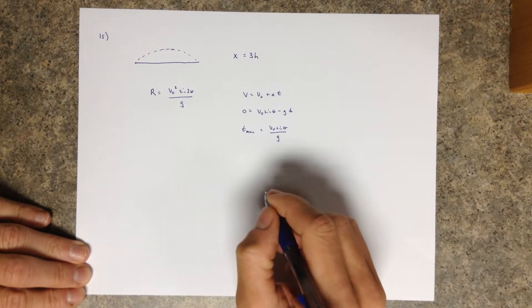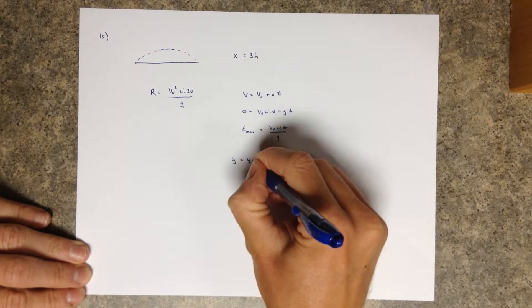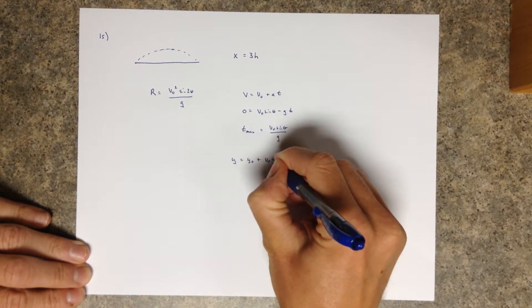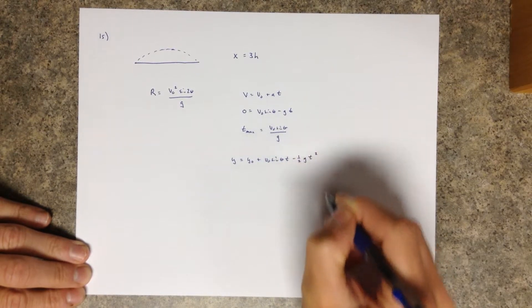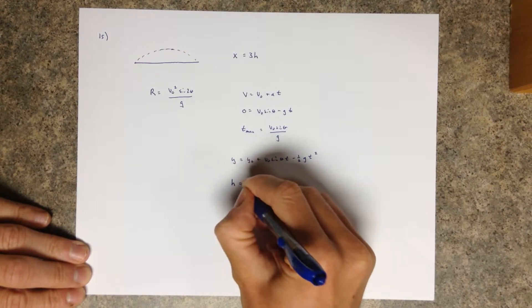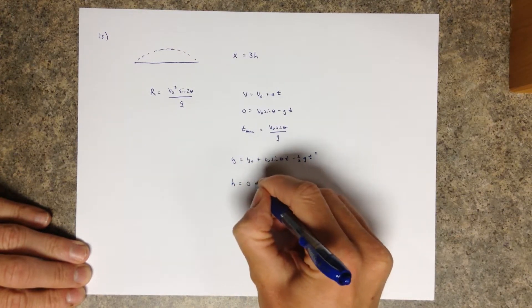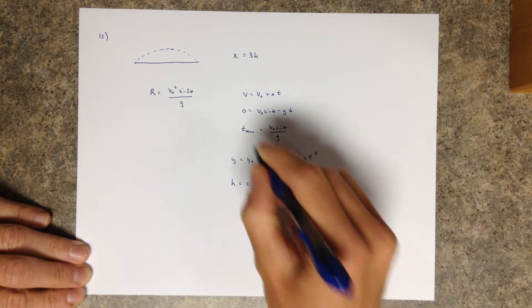Well, we can figure out the max height then. So the max height is just our basic vertical equation. And we can plug in that time. So this y represents the height. We got launched at zero, so v naught sine theta, and t, well, t max is v naught sine theta over g.